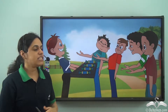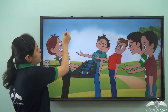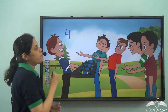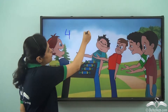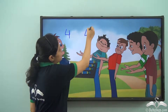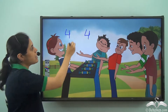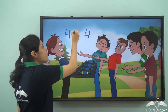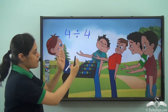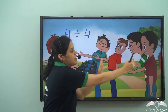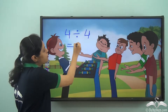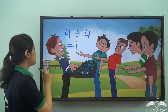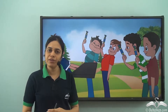Now what about this? Rohan has four toffees and there are four friends, so he needs to divide the four toffees among four friends. How many toffees will each get? Four divided by four is one, so each friend gets one toffee.